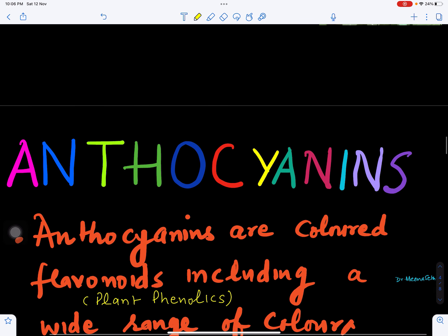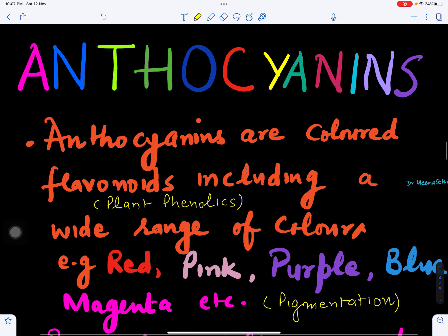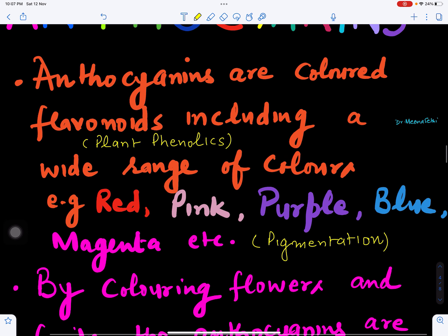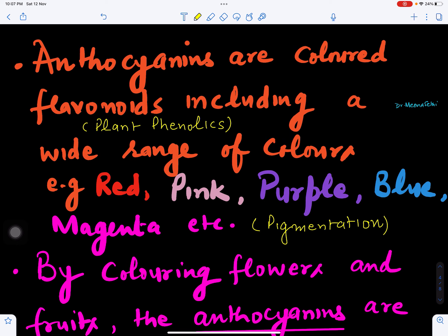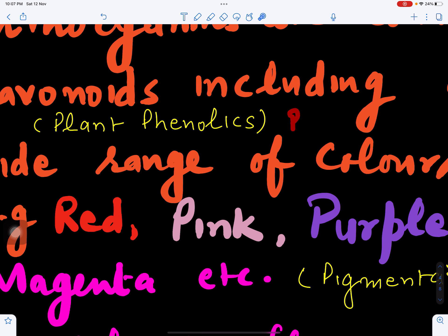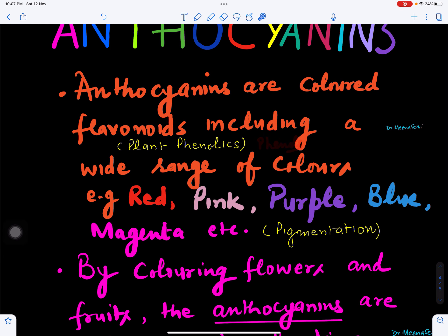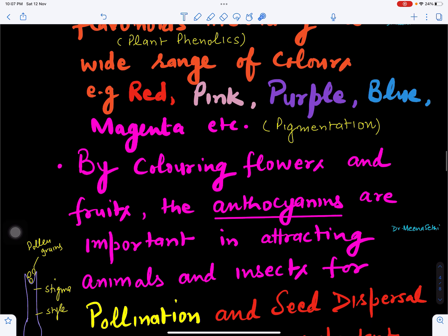Now these colors are basically due to the pigments called anthocyanins. Anthocyanins are colored flavonoids including a wide range of colors: red, pink, purple, blue, and magenta, orange-red, rosy red, light pink, like we have earlier seen in the flowers. Basically anthocyanins are also plant phenolic compounds, so they are phenols produced by plants which give different colors to the flowers and fruits.